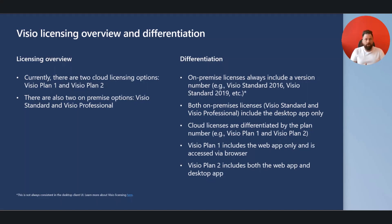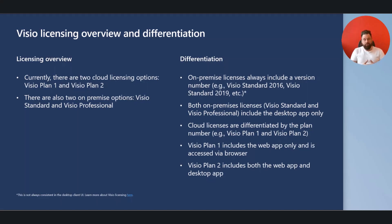Visio Plan 1 is a cloud-based license and it only runs in the browser, which means it exists only as a web app. There is no deployment necessary — you can just open your browser and you're good to go. Visio Plan 2 includes Plan 1 and adds a desktop application in addition to what Plan 1 already has to offer.